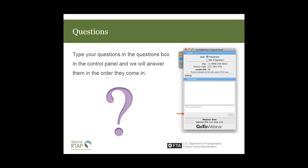Question: What happens to the 15% states must set aside if they do not expend all of these funds on intercity needs, assuming they have not certified their needs are met? Answer: If there has been a certification and there are definitely no unmet intercity needs, then those funds go into the regular Section 5311 program for that state and can be used for any other 5311 eligible purposes.